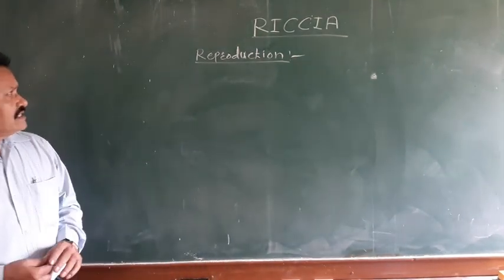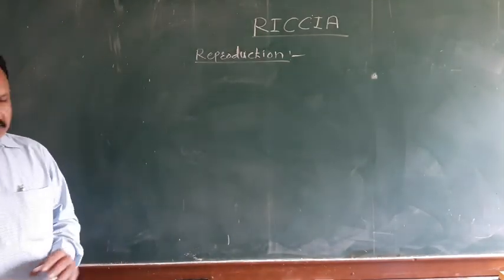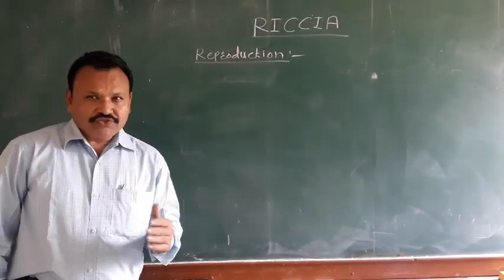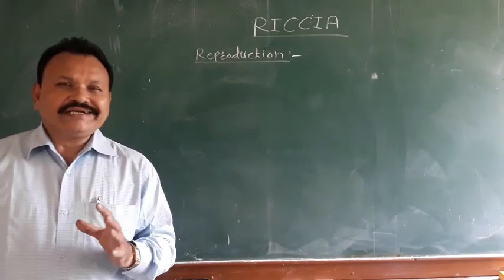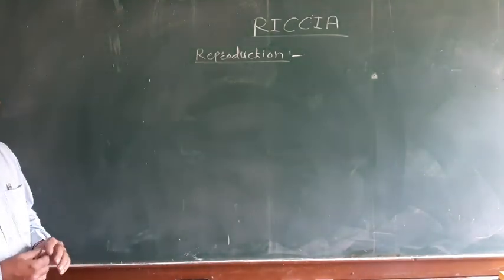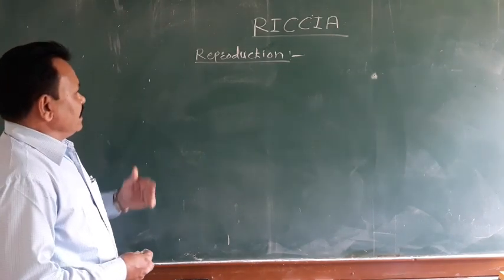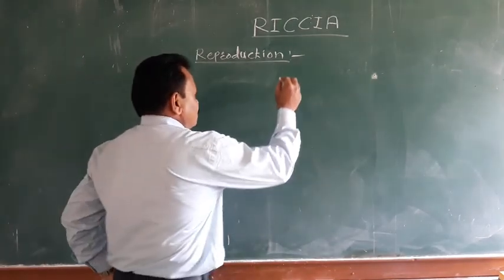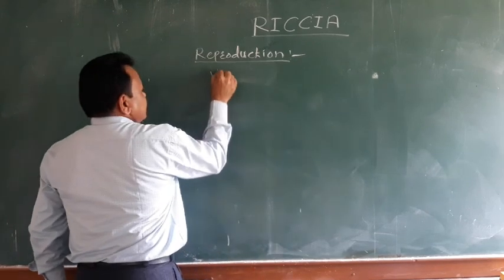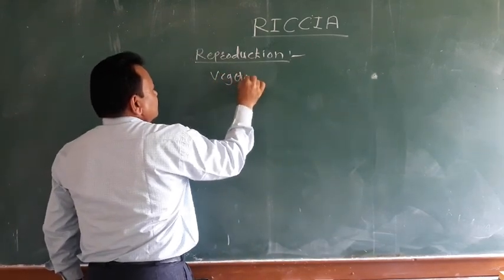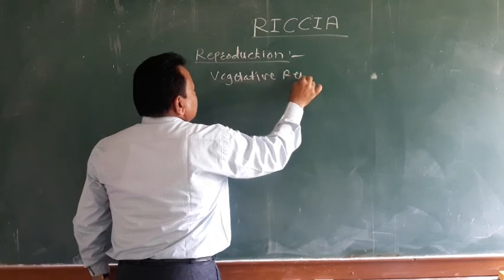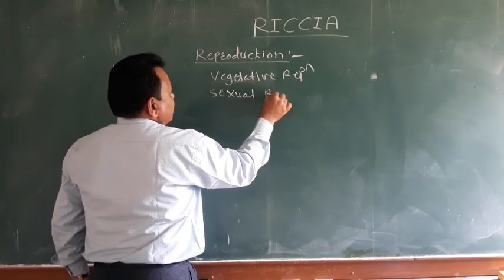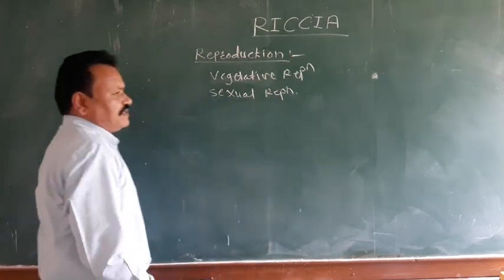Today we deal about the reproduction in Riccia. Yesterday we covered the systematic position, distribution, external morphology, and internal structure of the thallus of Riccia. Today we will deal about the reproduction in Riccia. Riccia can be reproduced by two methods: one is vegetative reproduction and another is sexual reproduction.